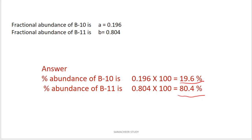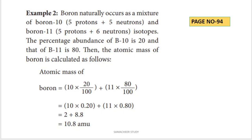This is a very simple problem — example problem number 2. We can verify this in reverse: given percentage abundances, calculate average atomic mass using the formula: average atomic mass equals first isotope atomic mass 10 multiplied by relative abundance 20 divided by 100, which is 0.2, plus second isotope 11 multiplied by 80 divided by 100. The answer is 10.8 amu. So B10 is approximately 20% and B11 is approximately 80%, which is consistent.